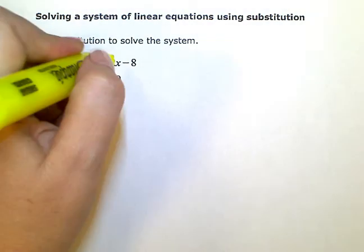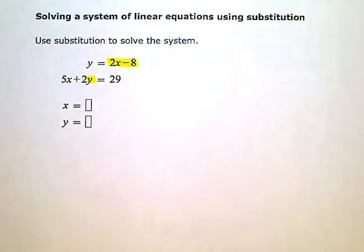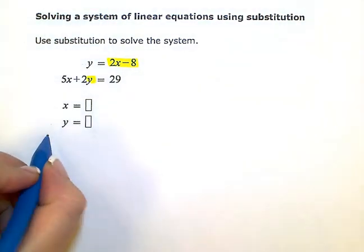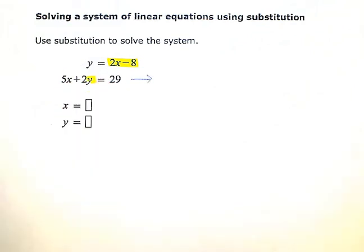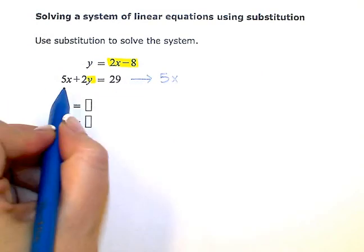I'm going to take 2x minus 8 and in my other equation where there's a y, I'm going to make that substitution or that switch. So the first thing I need to do is rewrite this equation as 5x plus 2,